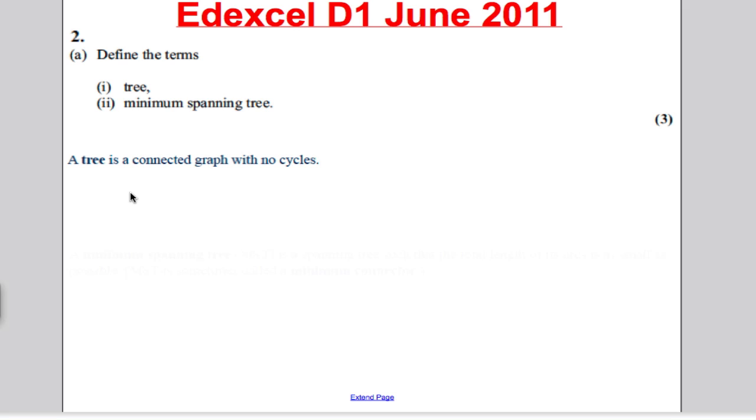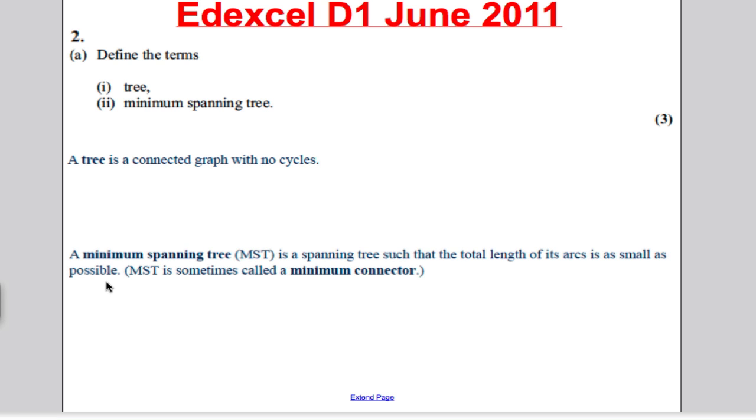It's a subgraph that contains all the vertices and has no cycles, but it's as small as it possibly can be. A minimum spanning tree is a spanning tree such that the total length of all the arcs is as small as possible, or the total weight of all the arcs. It's as simple as that.